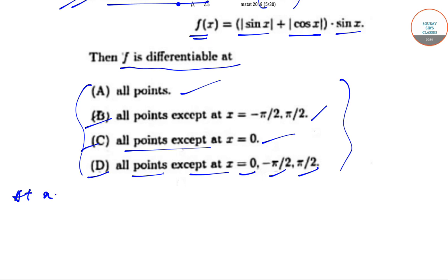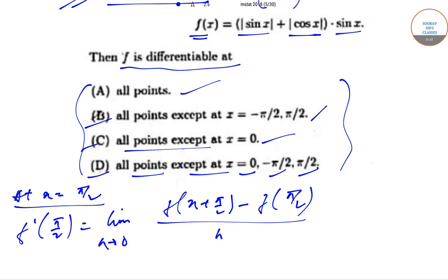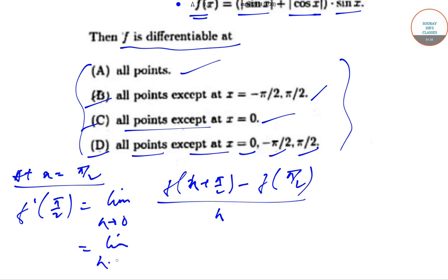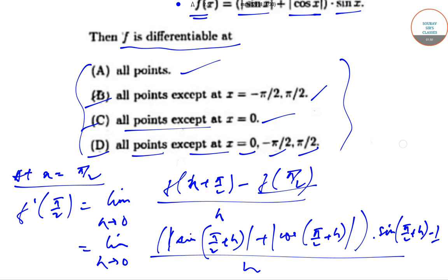We'll find out at x = π/2. f'(π/2) is given by the limit as h tends to 0 of [f(π/2 + h) - f(π/2)] / h. This becomes the limit as h tends to 0 of [|sin(π/2 + h)| + |cos(π/2 + h)| - f(π/2)] / h. f(π/2) evaluates to 1.